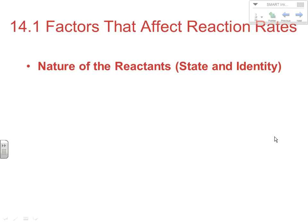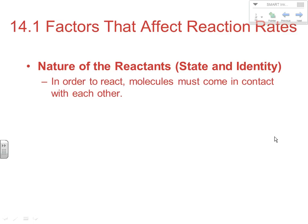The first section gets into factors that affect reaction rates. There are two things related to the nature of reactions: how state affects reaction rates, and how the identity of substances can have an effect. First off, in order to react — something you were exposed to in pre-AP chemistry — molecules must come in contact with each other. Unless they're at the same place at the same time, particles can't interact. They need to collide, which is why the theory fundamentally behind reaction rates is referred to as collision theory.